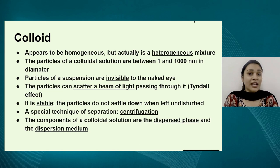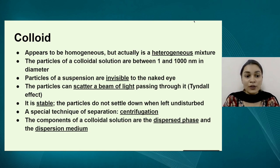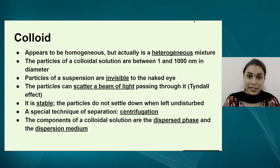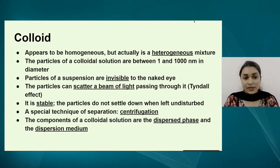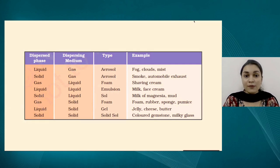One special technique used to separate colloid components is centrifugation, where the mixture is spun at very high speed, resulting in separation based on density. The heavier, denser component settles at the bottom and the lighter component rises up. Just as the components of a true solution are called solute and solvent, the components of a colloid are called dispersed phase and dispersion medium. The dispersed phase is equivalent to the solute and the dispersion medium is equivalent to the solvent. Based on the state of these two phases, we have various types of colloids.